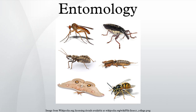Entomology is rooted in nearly all human cultures from prehistoric times, primarily in the context of agriculture, but scientific study began only as recently as the 16th century. William Kirby is widely considered the father of entomology. In collaboration with William Spence, he published a definitive entomological encyclopedia, Introduction to Entomology, regarded as the subject's foundational text. He also helped found the Royal Entomological Society in London in 1833, one of the earliest such societies in the world.